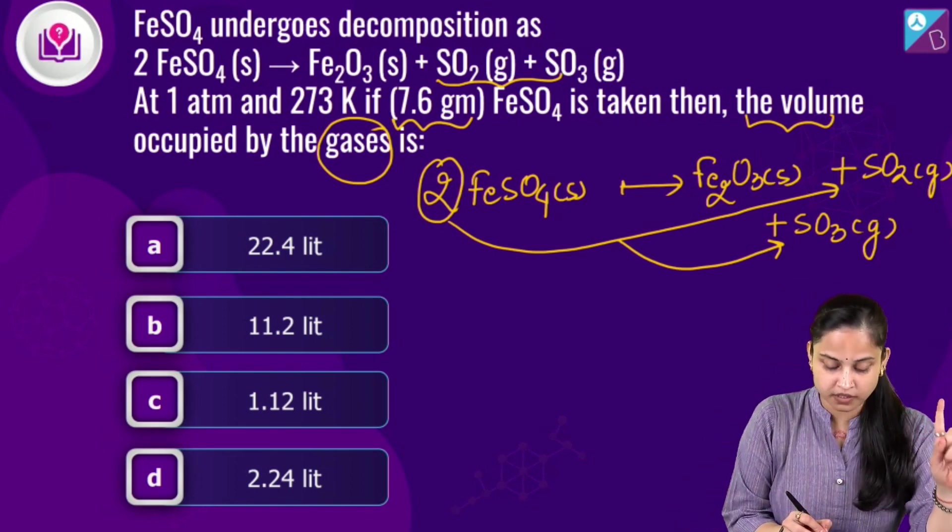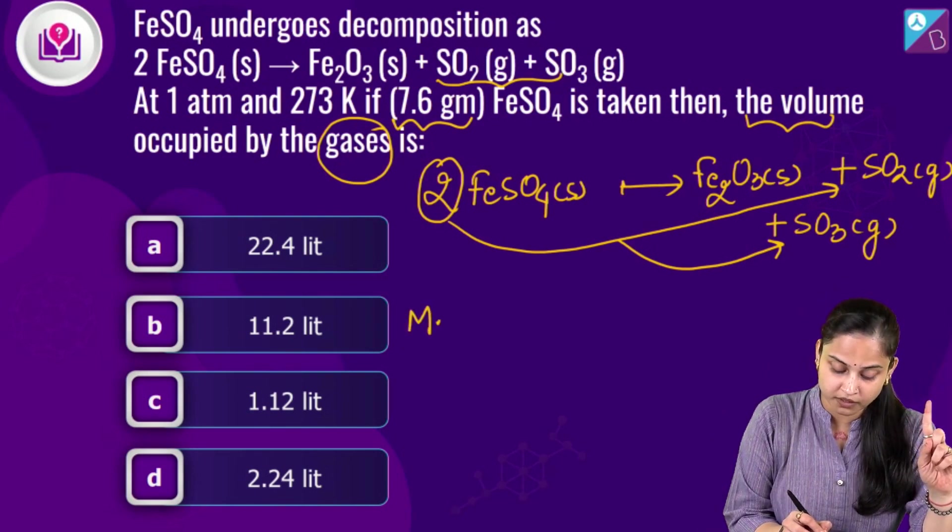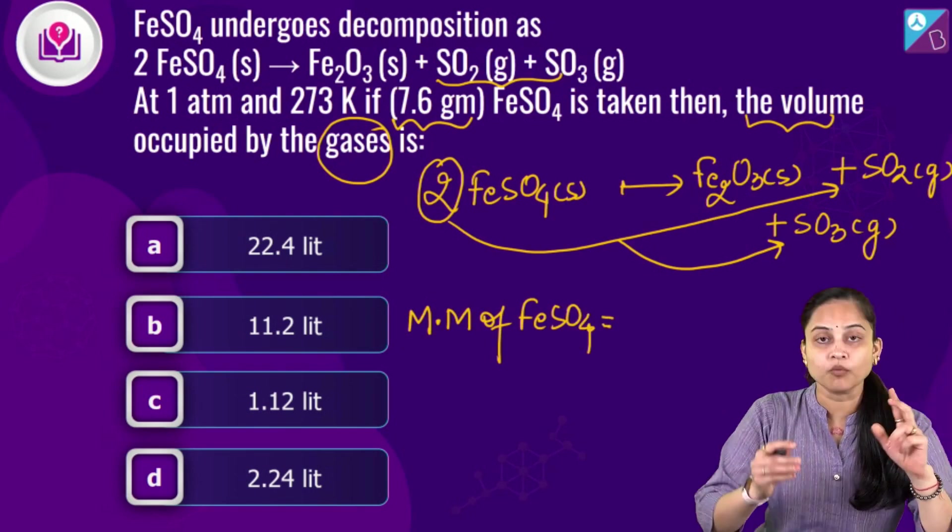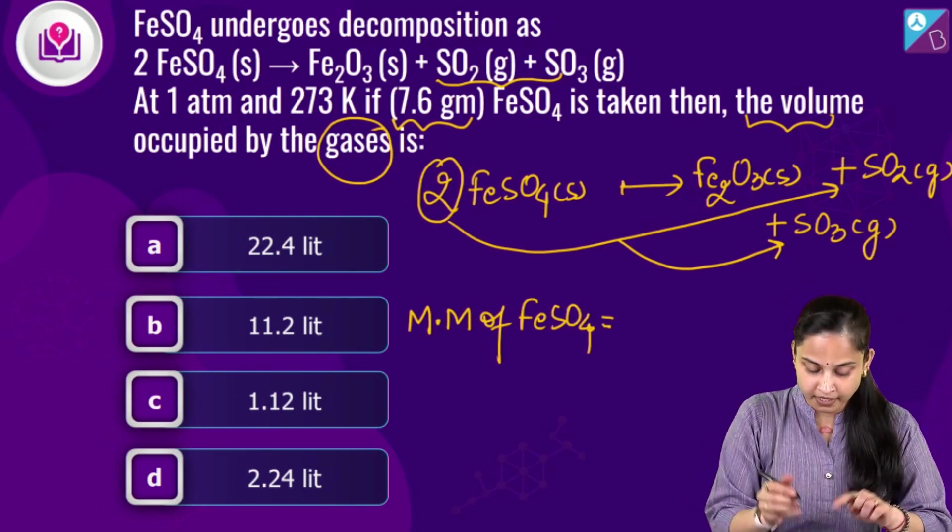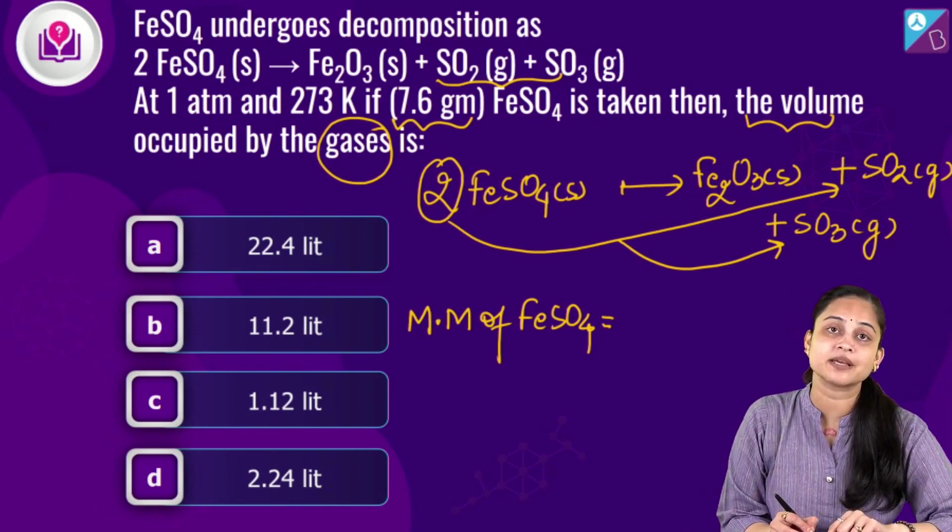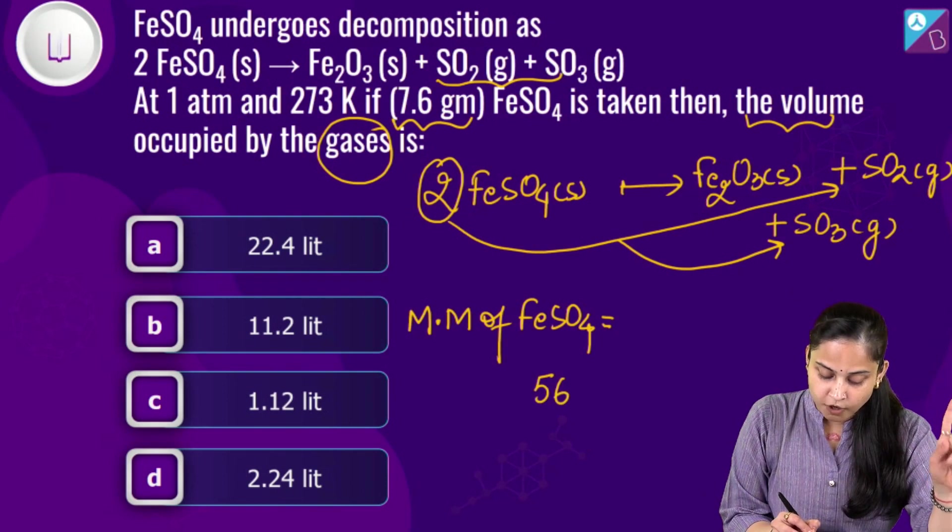Now, initially let's calculate out the molecular mass of FeSO₄. What will be the molecular mass of FeSO₄? It will be equals to, if I just talk about the atomic weight of Fe, it's basically 56, of sulphur, it's 32.